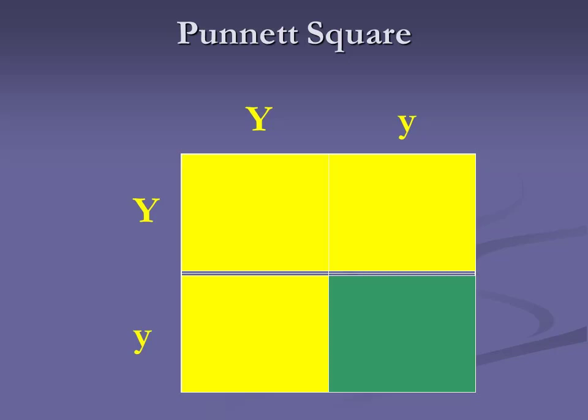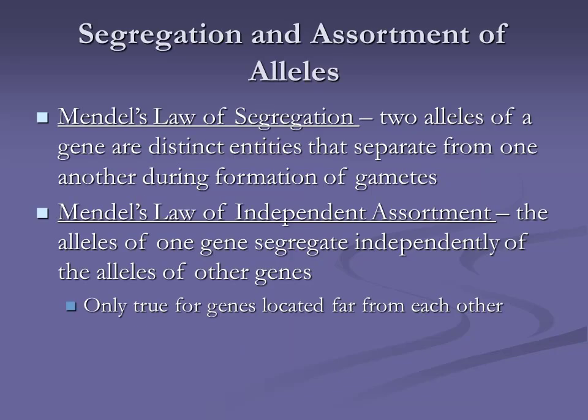From looking at all these characteristics, Mendel came up with two laws of heredity that largely hold true even today with what we know about genes, alleles, and chromosomes. Mendel has a law of segregation and a law of independent assortment. The law of segregation states that two alleles of a gene are distinct entities, and these two alleles separate from one another during the formation of the gametes — the sperm and the egg.